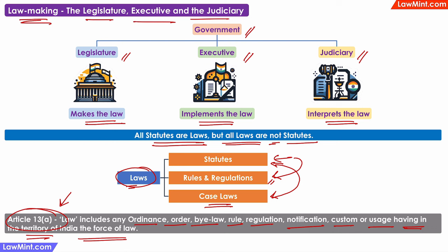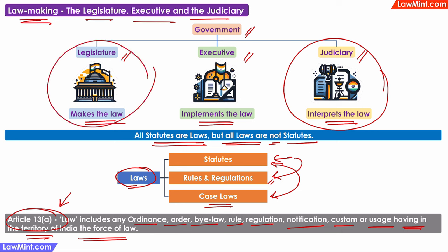When we look at the subject of interpretation of statutes and principles of legislation, the interpretation of statutes part was more focused on how the judiciary interprets the laws by applying the primary rules, the secondary rules, and the presumptions. Whereas the principles of legislation part focuses on why laws are made by the legislature in the first place and the principles that influence the making of laws.